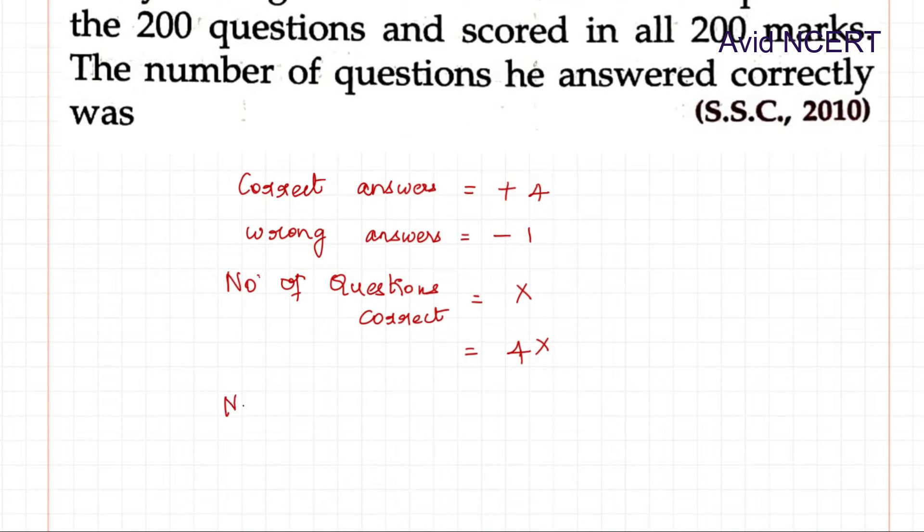And number of questions he got wrong answers, which is minus marks, equals the total number of questions he attempted, which is 200 minus the number of questions he got correct, which is X into minus 1. So the mark he would get for this is minus 1 into 200 minus X.